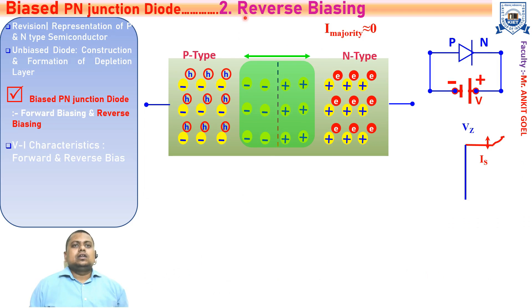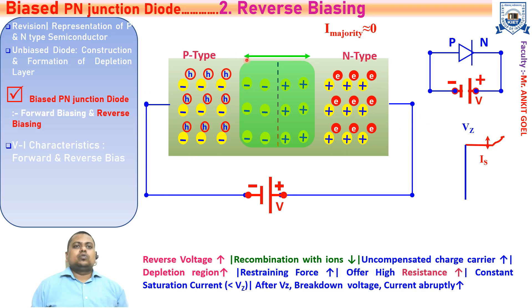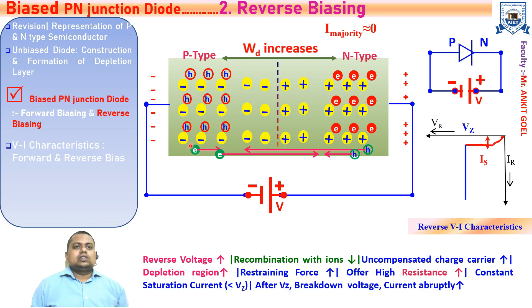Let us discuss the second type of biasing — reverse biasing of the P-N junction diode. A P-N junction diode is said to be reverse biased when the positive terminal of the battery is connected with the N-type semiconductor and the negative terminal is connected with the P-type semiconductor. These are the minority carriers — in P-type semiconductor we have electrons as the minority carrier, and in N-type semiconductor we have holes. The current which flows in the reverse bias condition is due to these minority carriers.